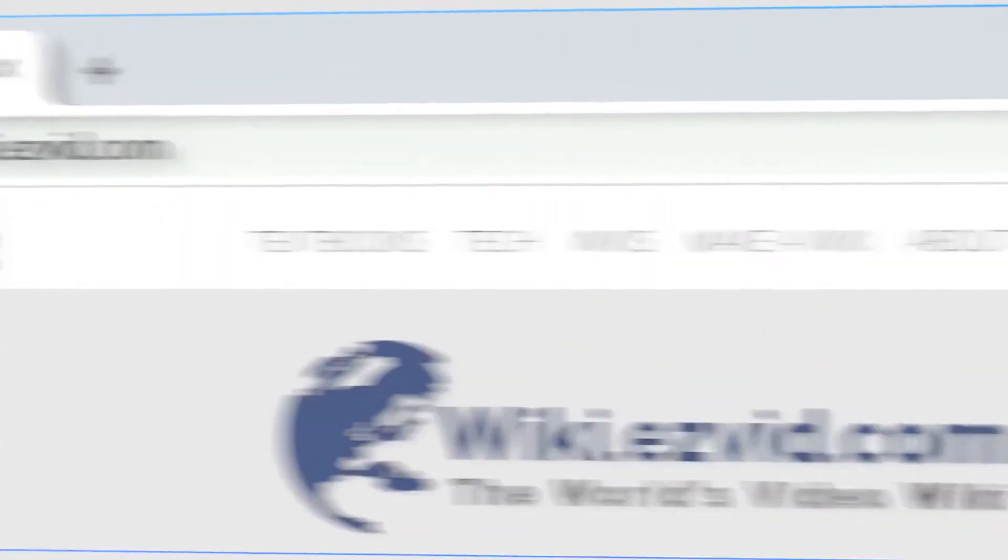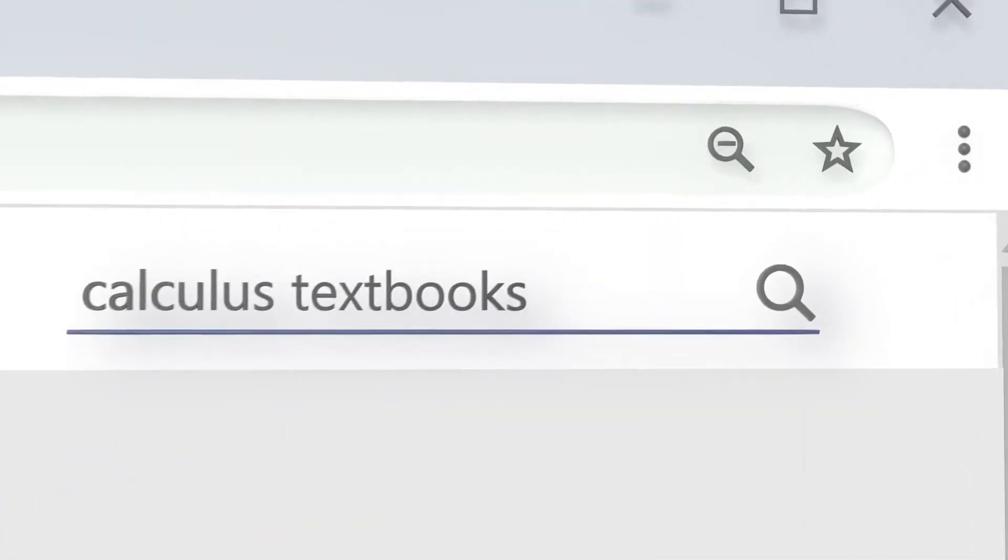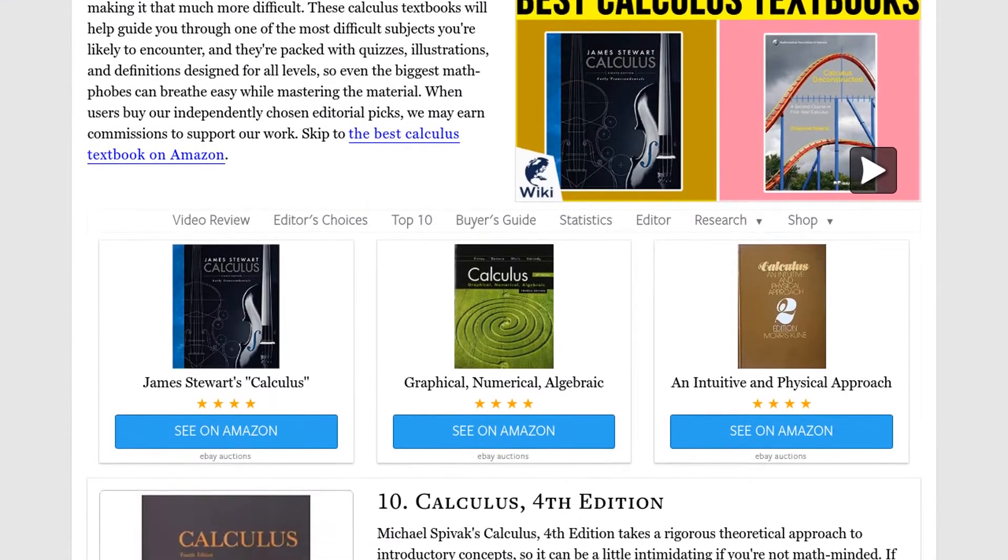Our newest choices can only be seen at wiki.easybid.com. Go there now and search for calculus textbooks or simply click beneath this video.